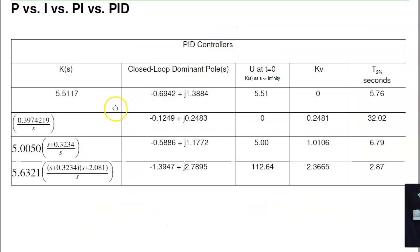So, kind of summarizing. If I go P versus I, PI, PID. The integrator made the steady state error go to zero. So, all the I, or the PI, PID, all have no steady state error.